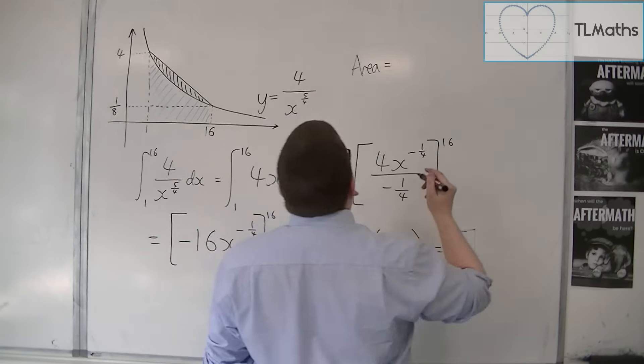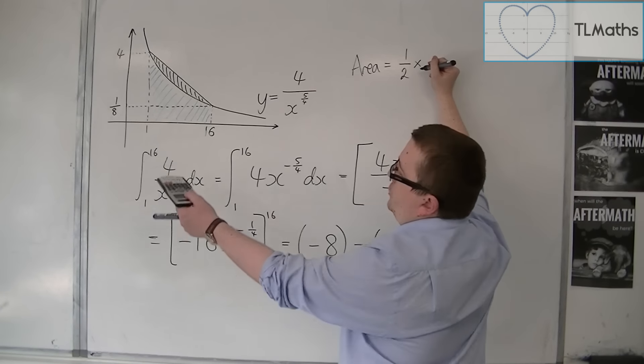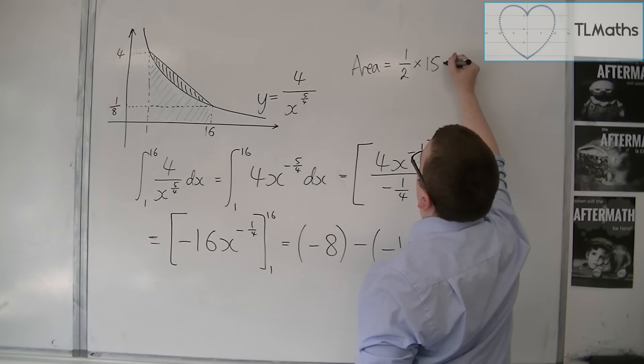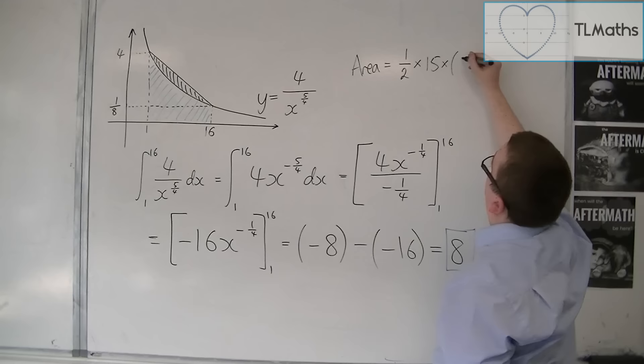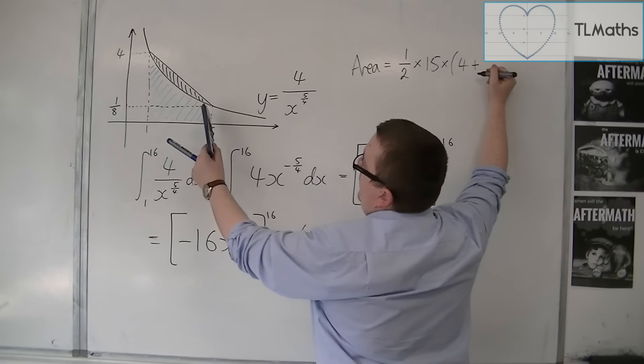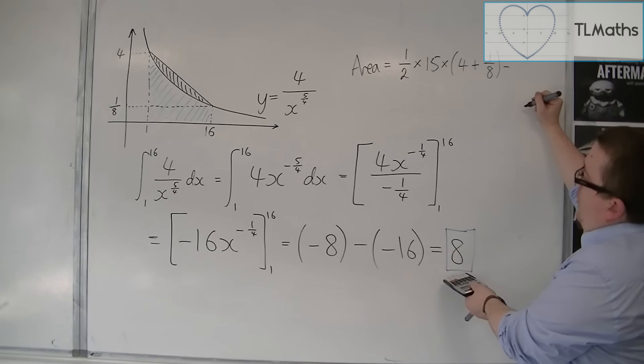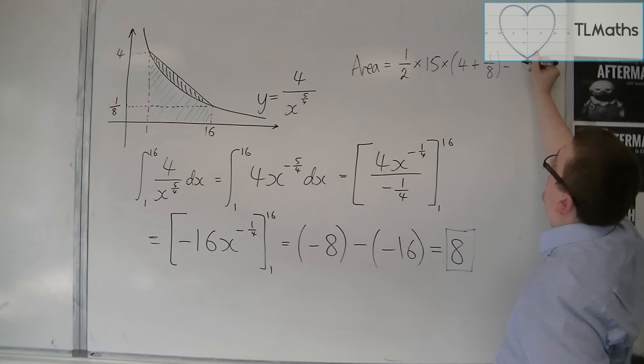So the area of the trapezium is 1 half times the width of the strip, which is 1 to 16, so 15, times by this side, so 4, plus that side, which is 1 eighth. And then subtract the area of, well, the blue region, OK, the area underneath the curve.